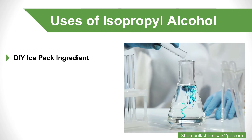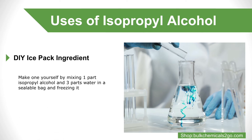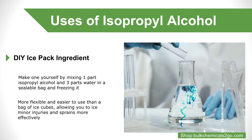DIY ice pack ingredient: can't find any ice packs in your freezer? You can make one yourself by mixing one part isopropyl alcohol and three parts water in a sealable bag and freezing it. It will be more flexible and easier to use than a bag of ice cubes, allowing you to ice minor injuries and sprains more effectively.